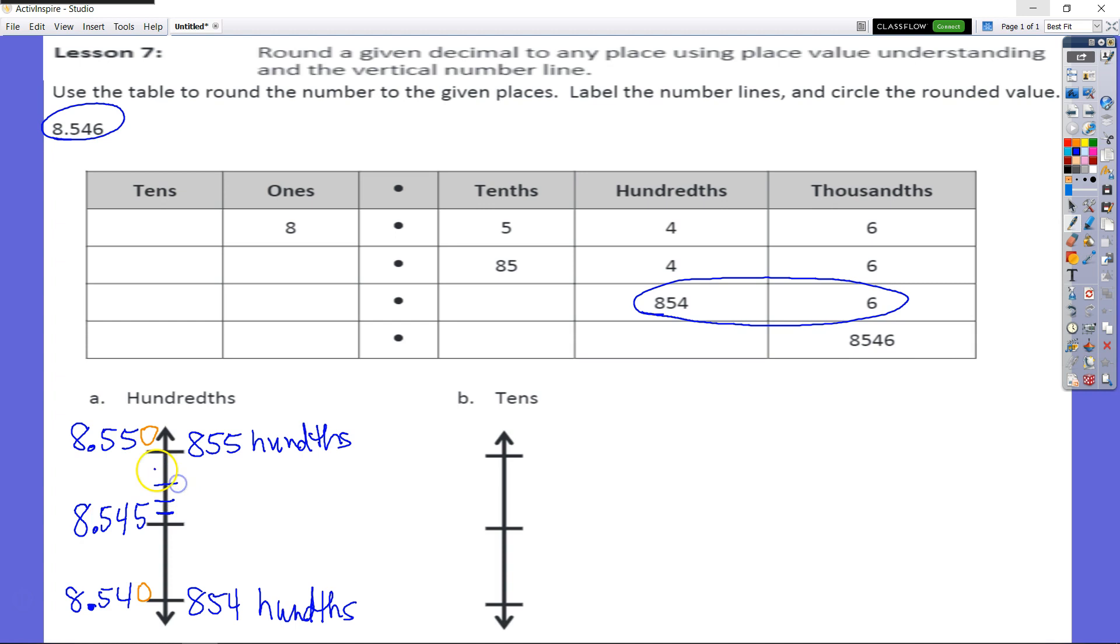That would be one, two, three, four tick marks there. One, two, three, four. So each one of those tick marks will represent another thousandth added to my number.